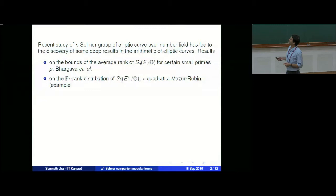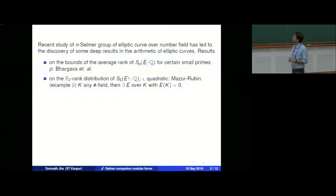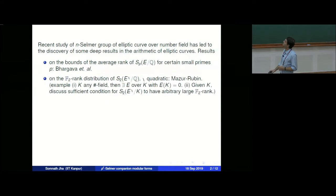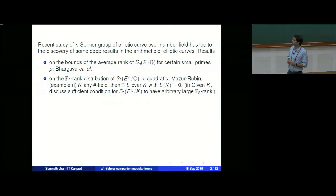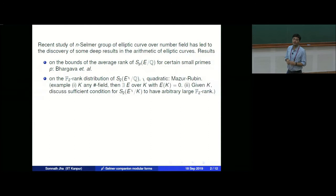Given any r, they can produce many examples — given an E under some mild condition like it should not have 2-torsion over Q or over K — then they produce many twists (in the sense of analytic number theory) that have arbitrarily large F_2-rank. On the other hand, one can also define the p^∞-Selmer group by taking the direct limit of p^n-Selmer groups, which is a cofinitely generated Z_p-module.